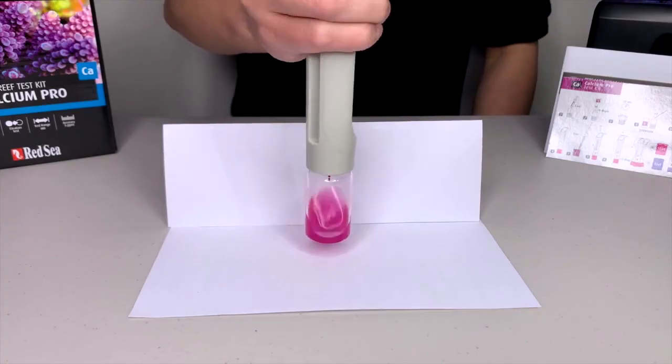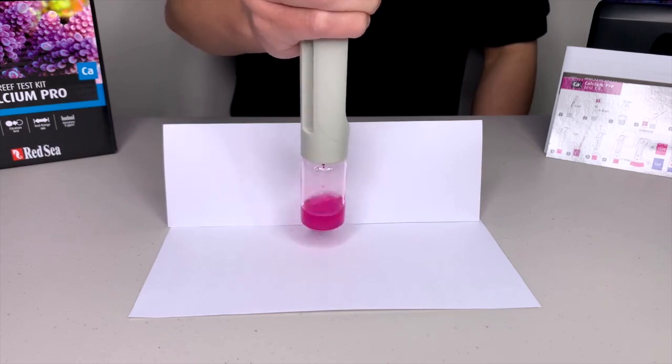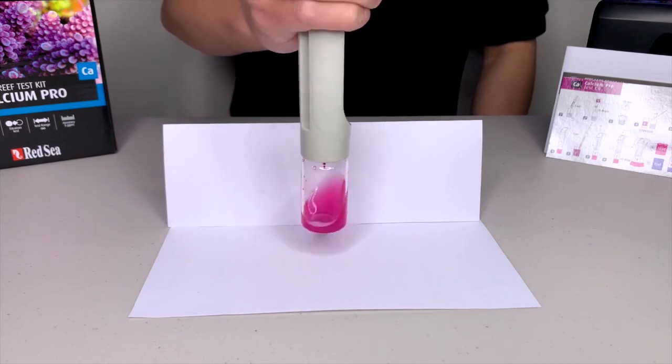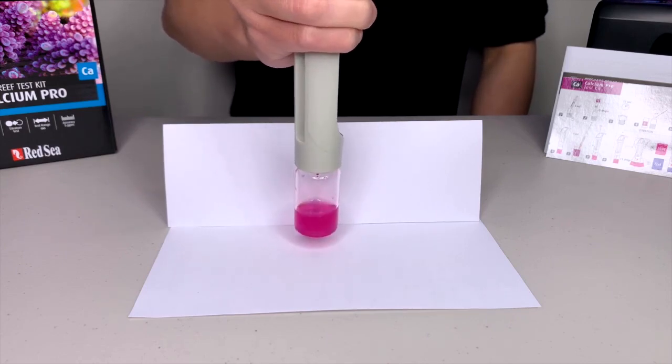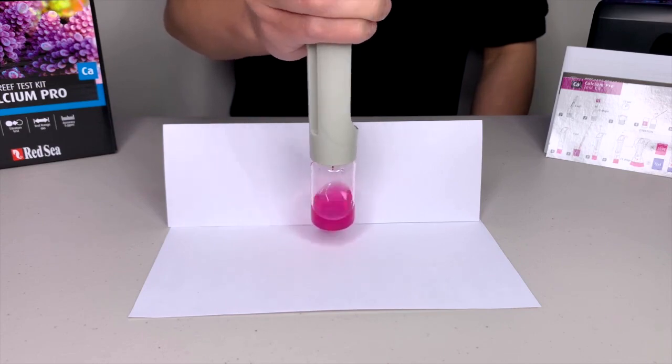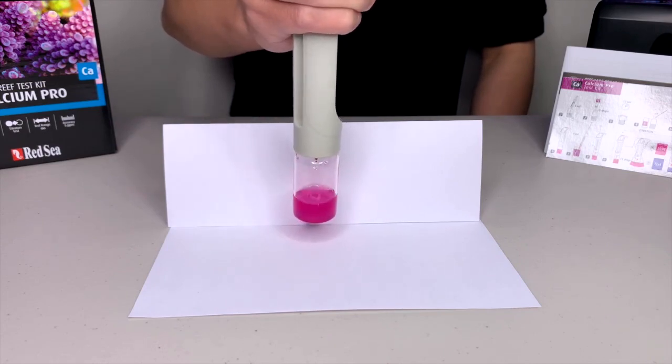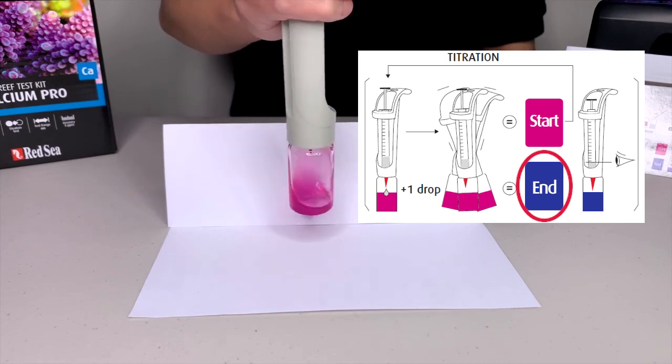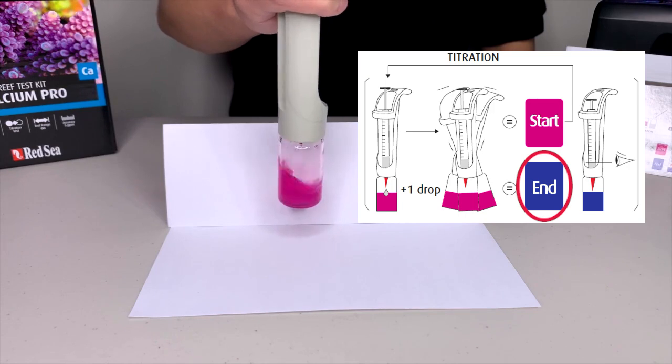Now we start doing the titration by slowly adding the titrant into the vial and shaking it at the same time. We are looking for the color change from pink to blue. Make sure to check the color in either fluorescent daylight or sunlight. The final color should match the end point in the card.